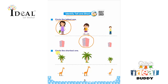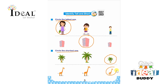After that the child has to circle the shortest one. There are three trees and the shortest tree is this one. After that, three pictures of a giraffe are given, and this is the shortest picture of the same.